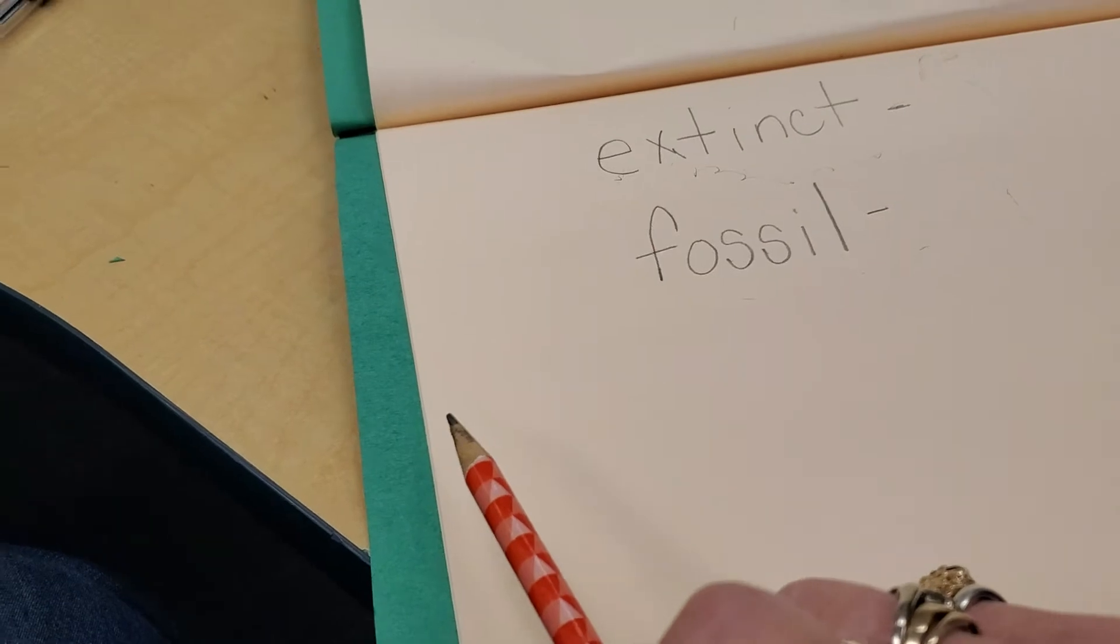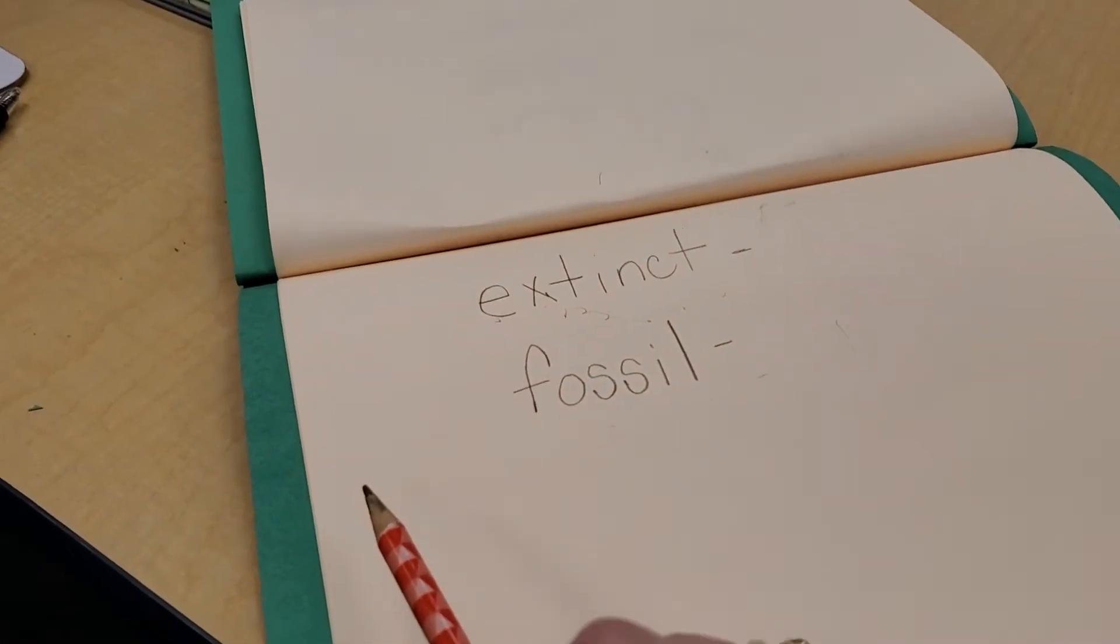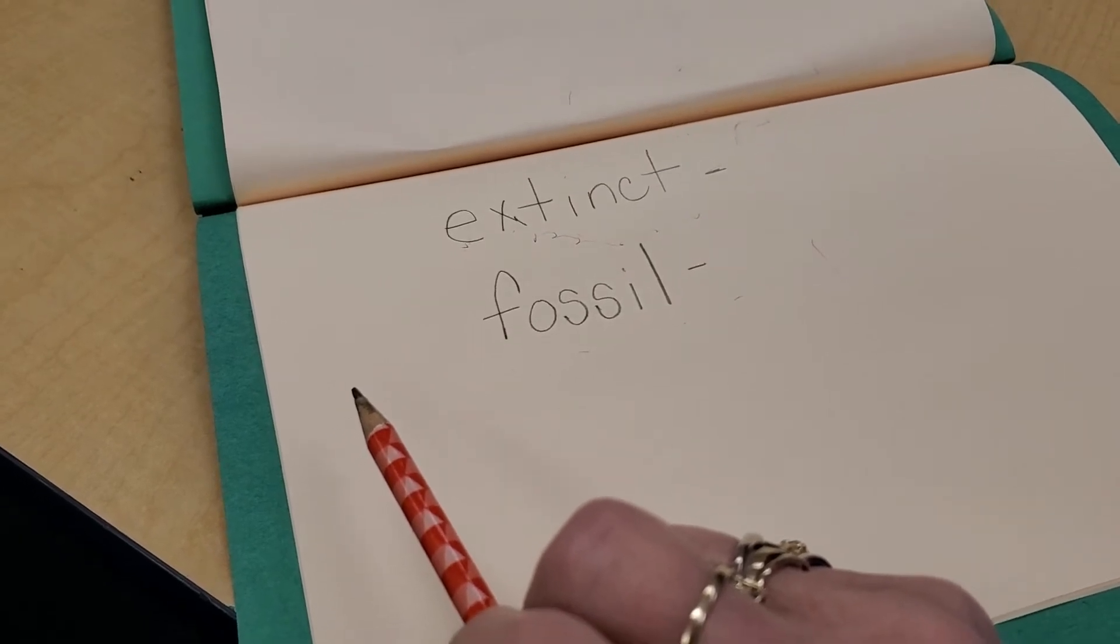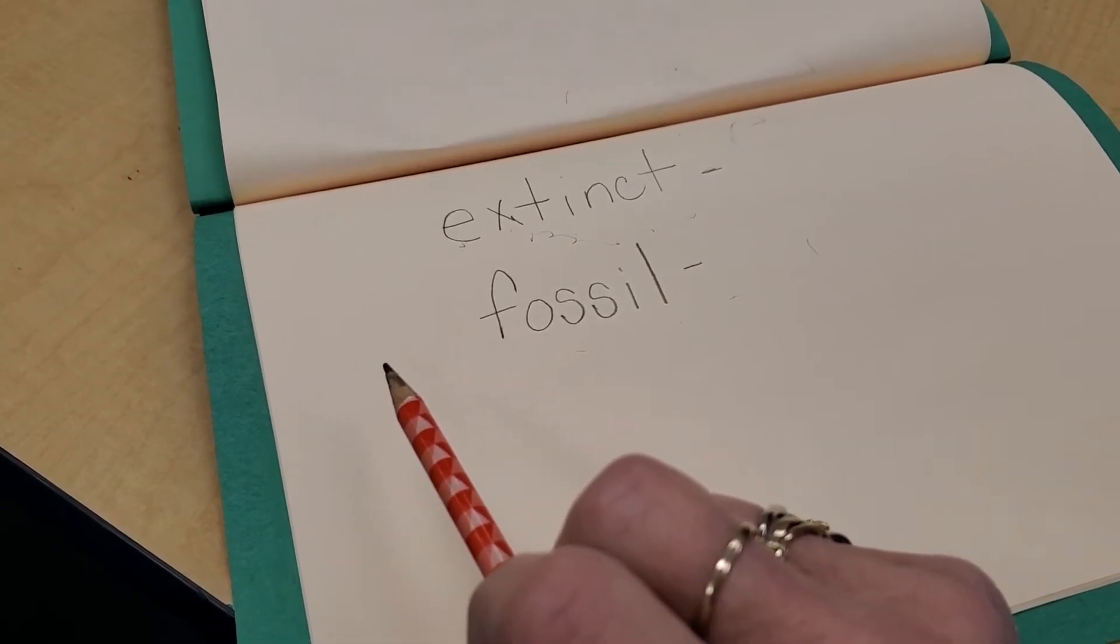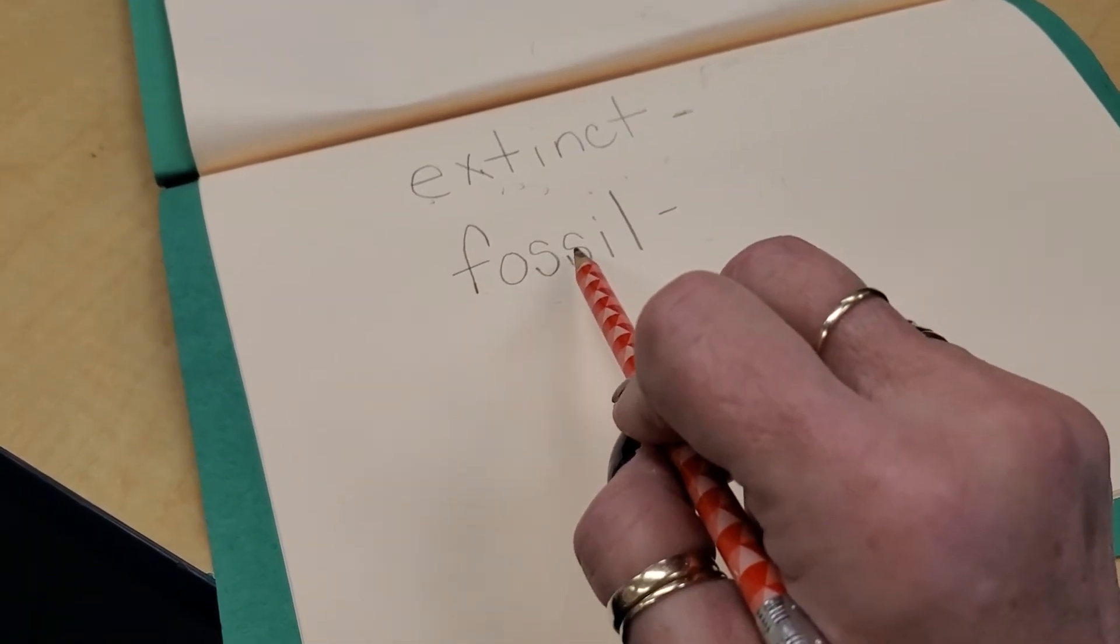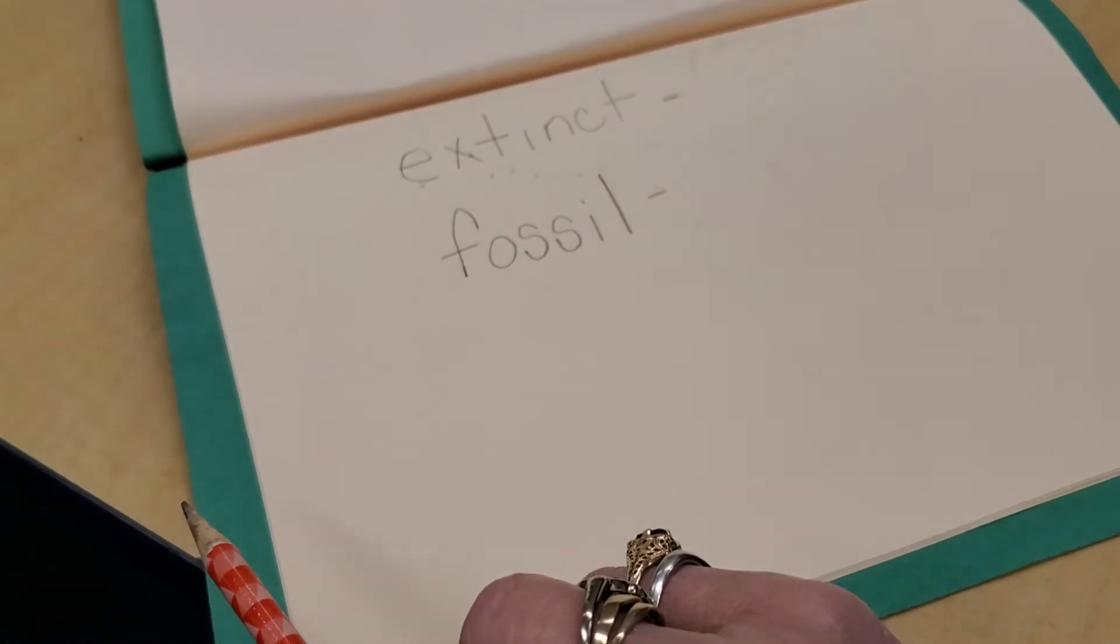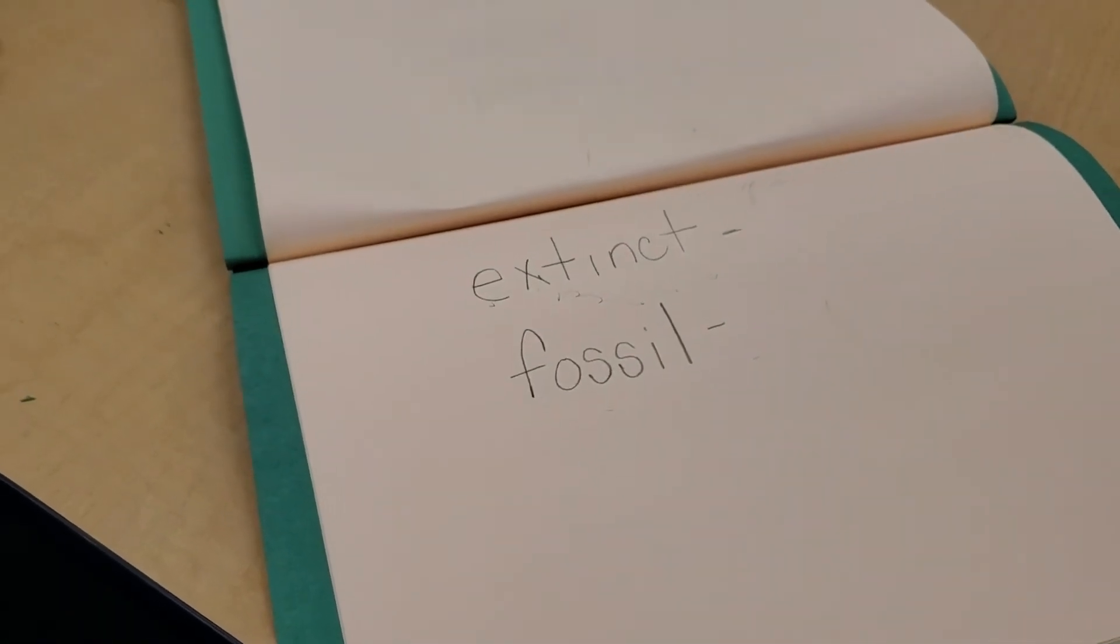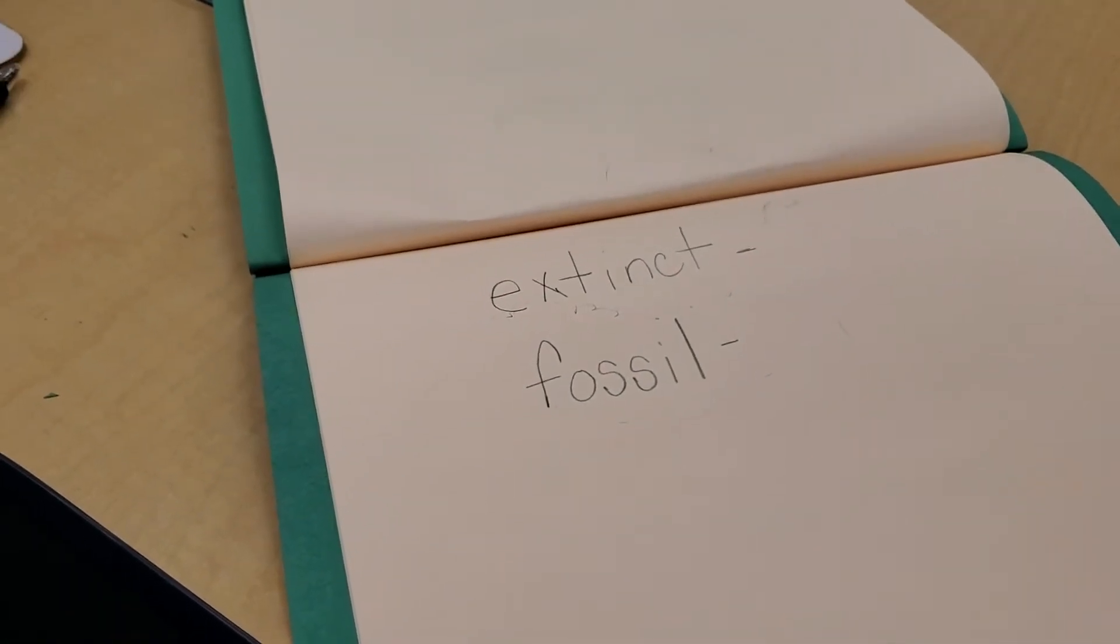And a paleontologist is somebody who digs in the earth and finds old things. A paleontologist finds dinosaur bones. F-O-S-S-I-L. Fossil. That's how we know that dinosaurs existed because paleontologists are finding fossils.